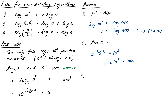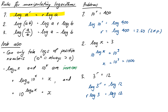Question 3: solve 3 to the power of r equals 12. Notice we don't have base 10 this time, but we can still use log base 10. Taking log of both sides: log of 3 to the r equals log of 12. Using the first log law, r comes out the front: r times log 3 equals log 12, so r equals log 12 divided by log 3, which is approximately 2.26 to 2 decimal places. That makes sense — 3 squared is 9, so we expect something a little higher than 2.